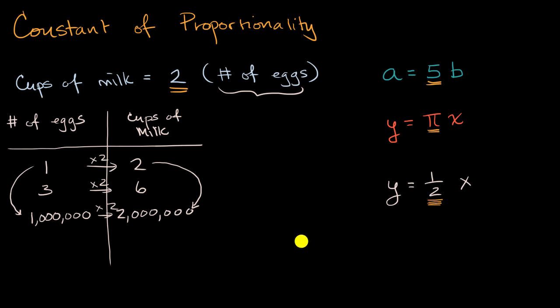In general, you might sometimes see it written like this. y is equal to k times x, where k would be some constant that would be our constant of proportionality. You see one-half is equal to k here, pi is equal to k right over there. So hopefully that helps.